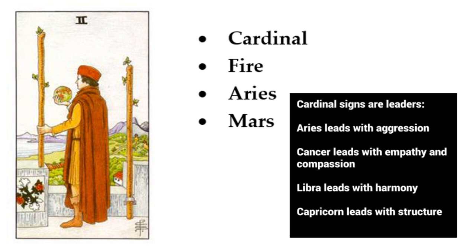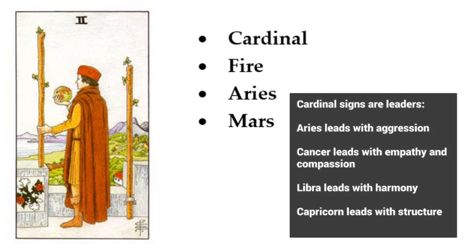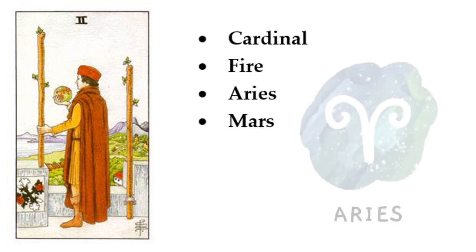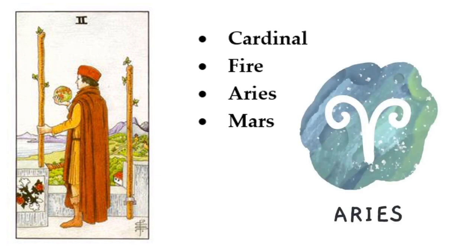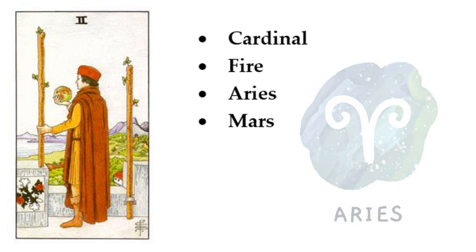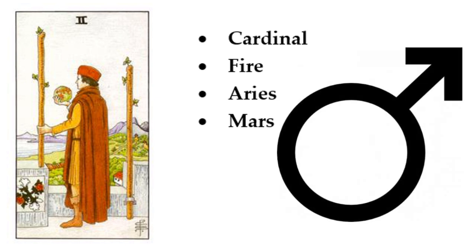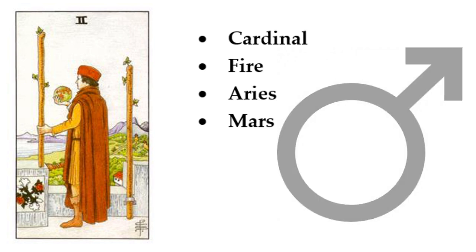Fire illuminates and inspires, and acts on instinct with an insatiable lust for life. Cardinal energy reflects the beginning, leadership, and initiation. The cardinal signs of Aries, Cancer, Libra, and Capricorn all spearhead the beginning of a season — Aries kicks off spring, Cancer starts summer, Libra begins fall or autumn, and Capricorn is the first winter sign. The Two of Wands is Aries: the beginning, a bold, passionate, assertive sign of the self. Mars is a warrior by nature, ruling over courage, bravery, leadership, physical strength, and confidence.